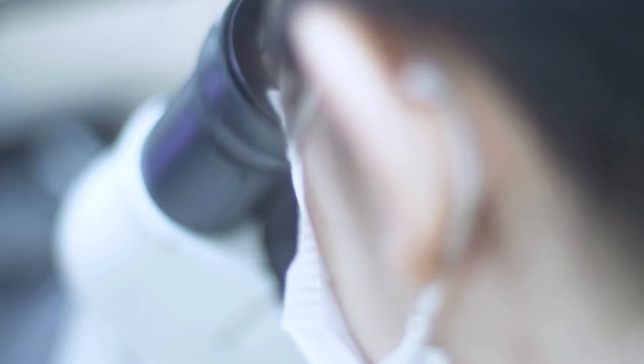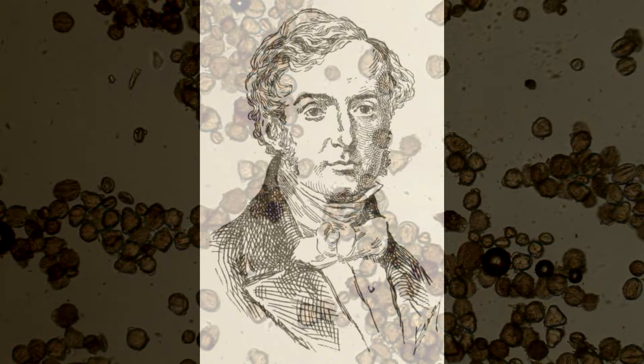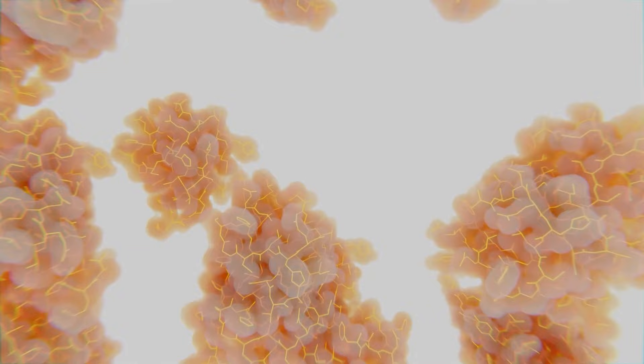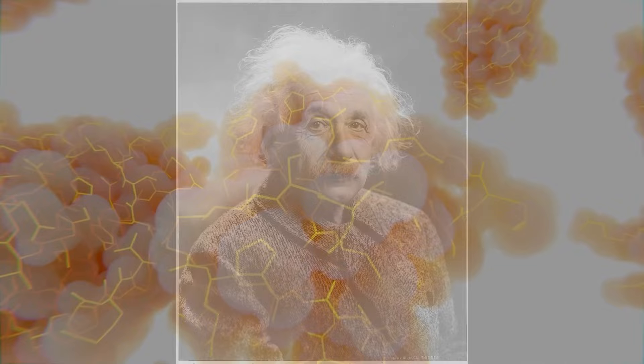But to truly visualize atoms, scientists needed more than just theories. They yearned for tangible evidence. Enter a peculiar dance that would hint at the unseen. Under the lens of his microscope, botanist Robert Brown observed pollen grains in water, moving in an erratic dance. This wasn't some choreographed performance. It was as if these grains were being nudged by unseen dancers.